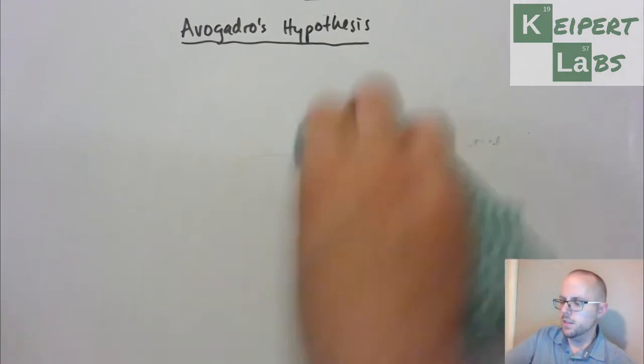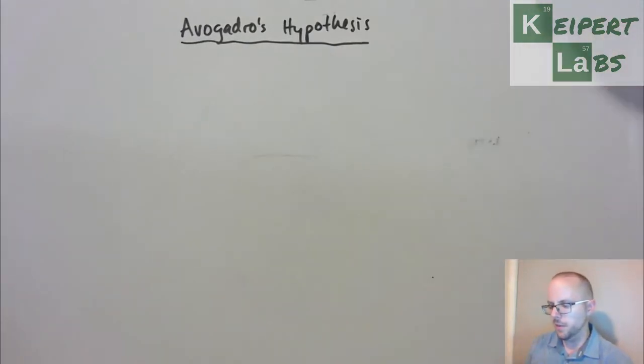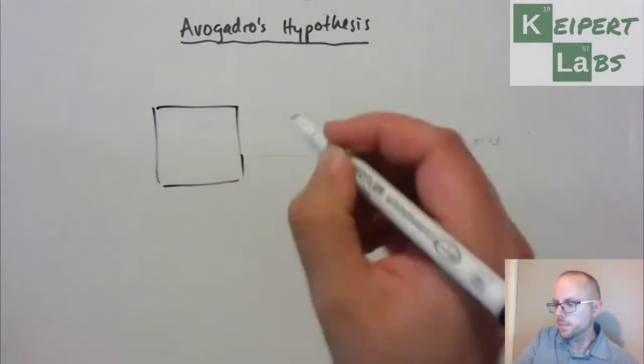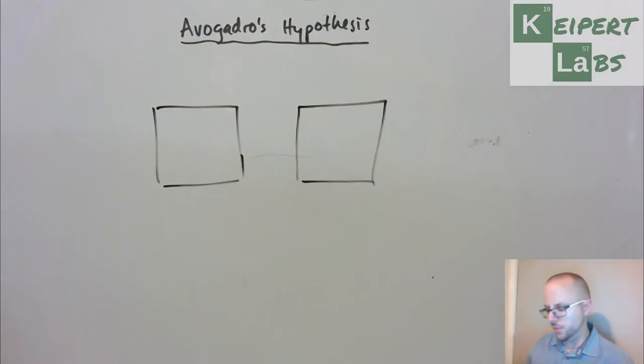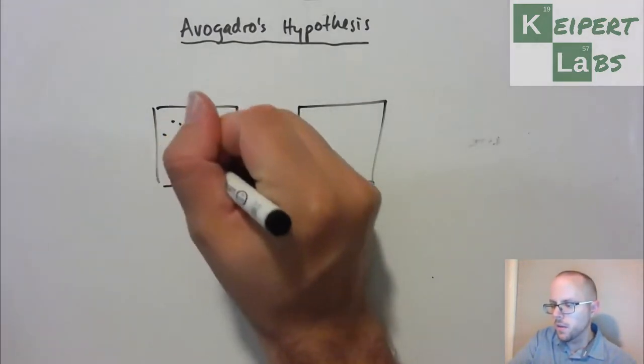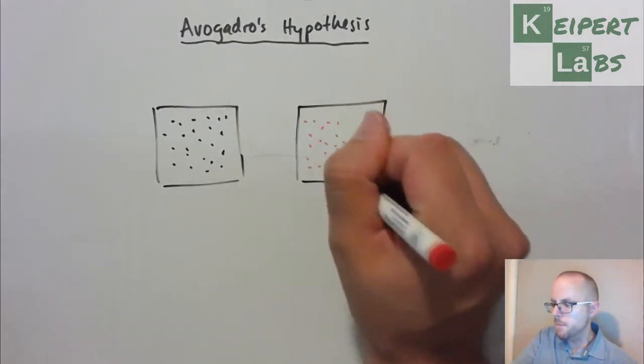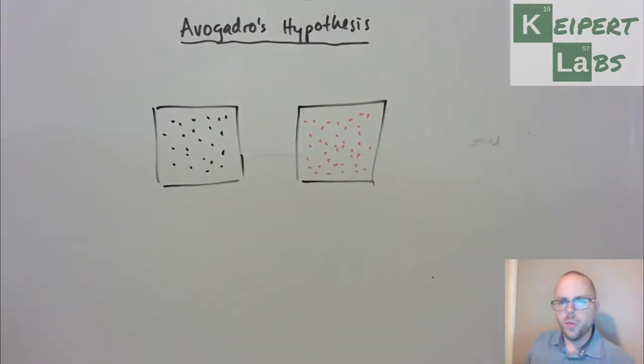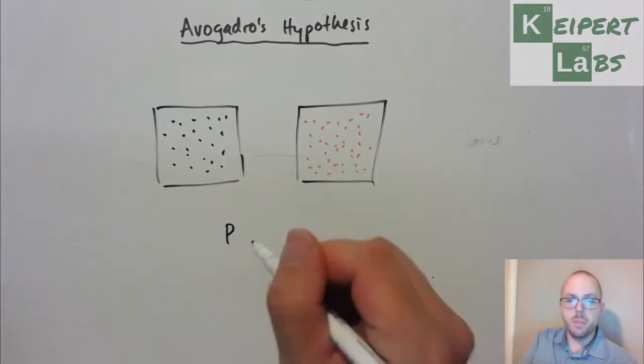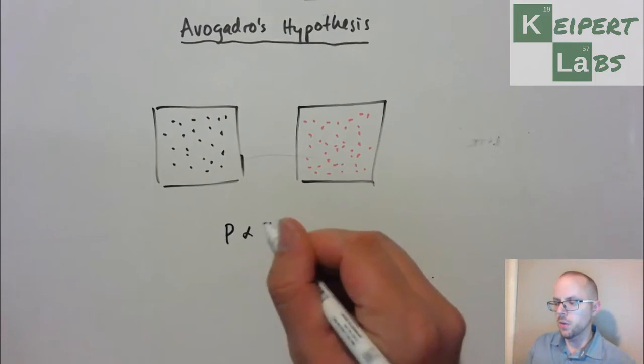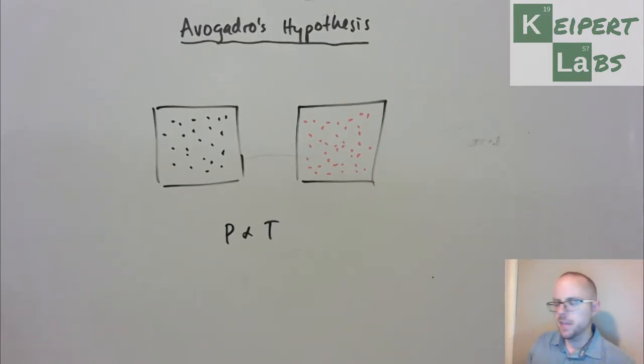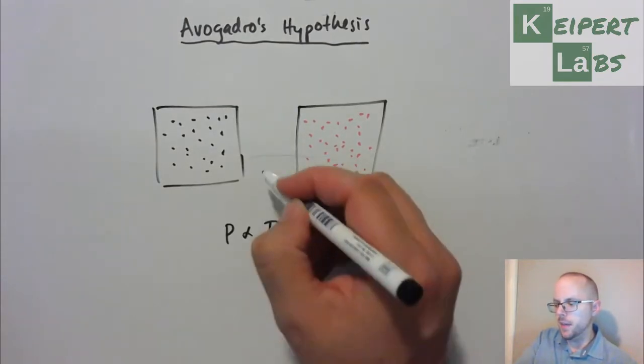This leads us to this concept called the Avogadro hypothesis. Avogadro was one of the early pioneer chemists doing a lot of work to do with gases. So, let's say that we had samples of two different gases. We've recognized, which is a relationship called Avogadro's Law, that with samples of gases, that pressure is proportional to temperature.